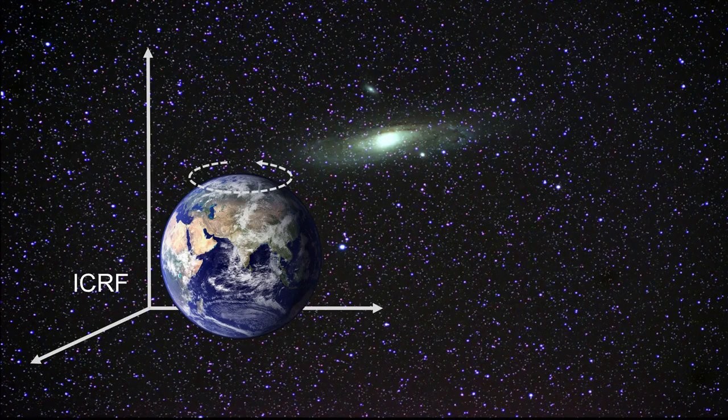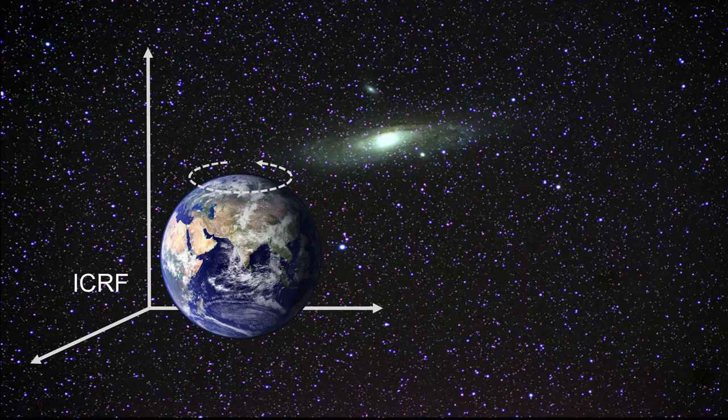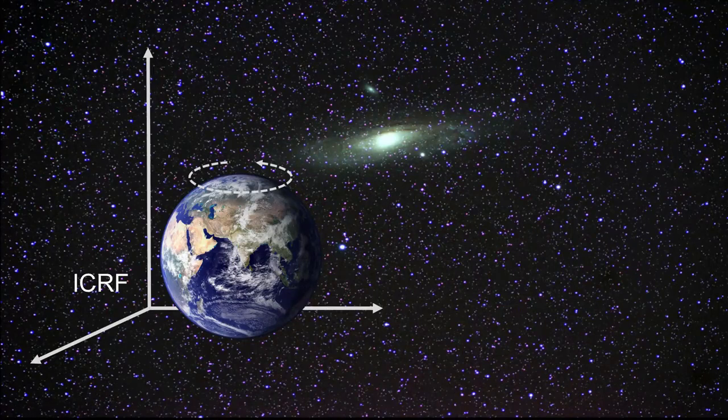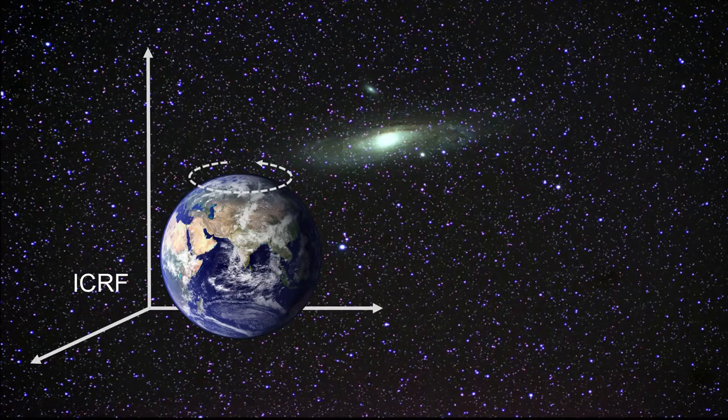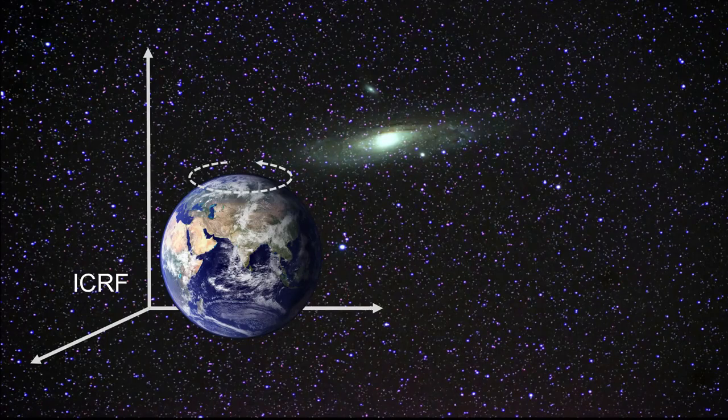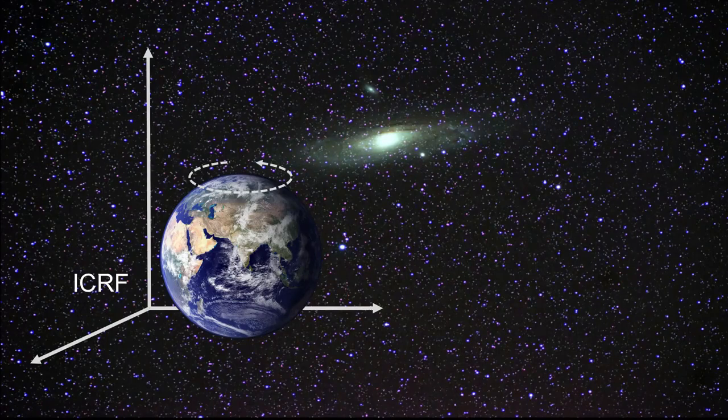Extragalactic objects can serve as sources for very long baseline interferometry. These are so far away that we can assume them to be at rest. Therefore, they can serve as International Celestial Reference Frame or ICRF, which basically is a list of radio sources with their astronomical coordinates. When observed from Earth, they appear to be fixed on the sky and we can use them to relate the rotation of the Earth to those distant objects.